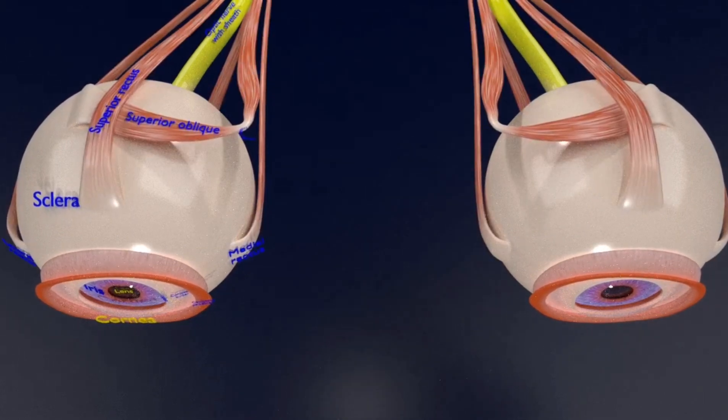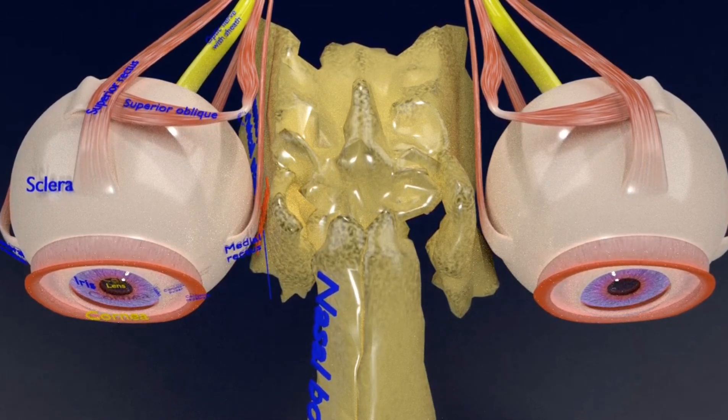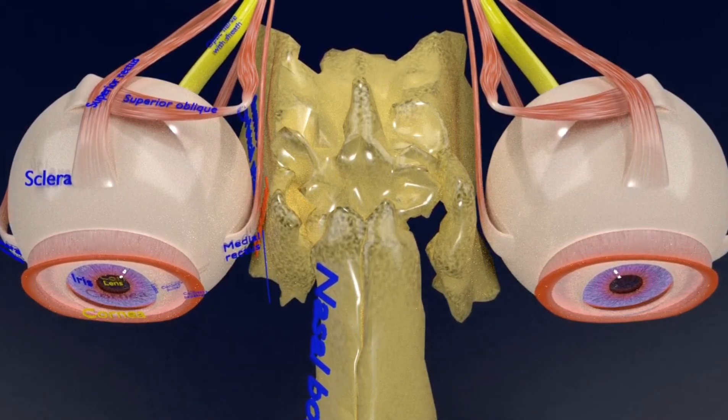Now, I'm going to tell you the sheath, the optic nerve sheath, what it's made up of. It's made up of dura mater, arachnoid mater, and pia mater.